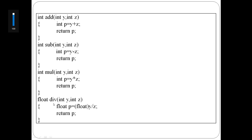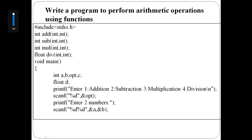The last function is division, function name 'div', two parameters y and z, both integers. We calculate y divided by z. The division result is normally a floating point number. Since y and z are integers, one number is converted to float, so the result is also a floating point number. p is declared as float, then return p. Since p is a floating point number, return type is float.